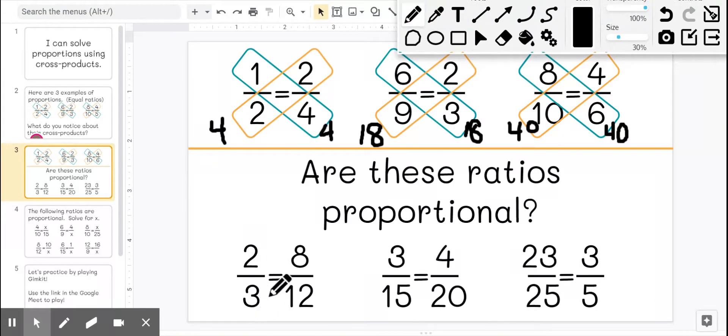All right. So this one here, if we do 3 times 8, we get 24. And if we do 2 times 12, we get 24. So yes, this is a proportion. These ratios are proportional.